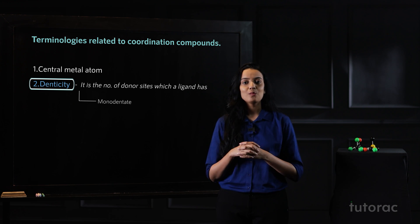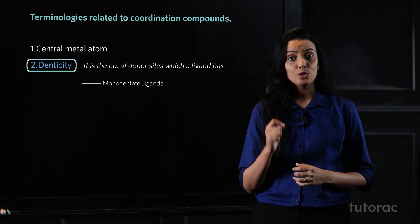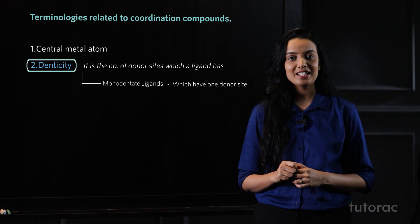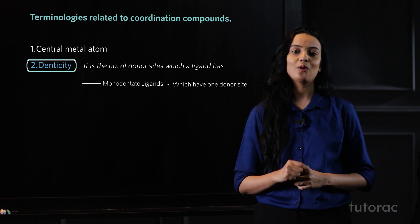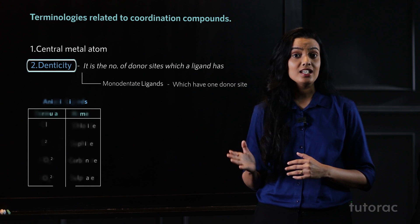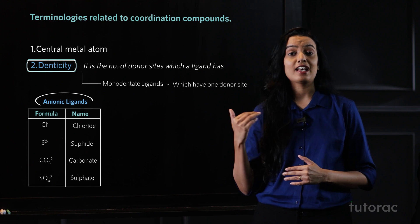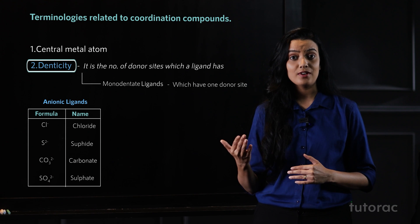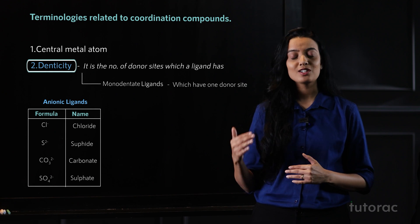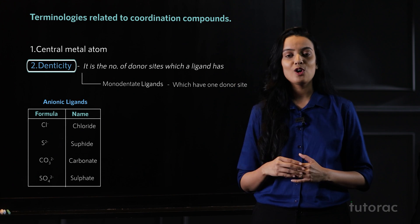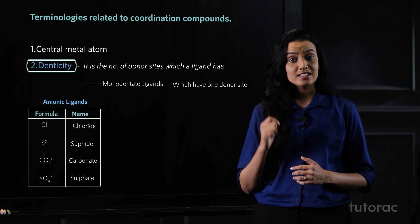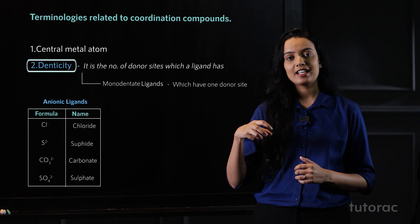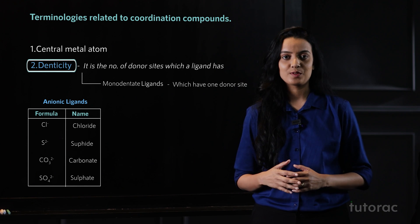Monodentate ligands are those which have one donor site, meaning they can form only one coordinate bond. You can see in the table that there are anionic ligands like chloride, sulfide, carbonate, and sulfate. All these ions belong to anionic ligands and since they form only one coordinate bond, they are categorized under monodentate ligands.